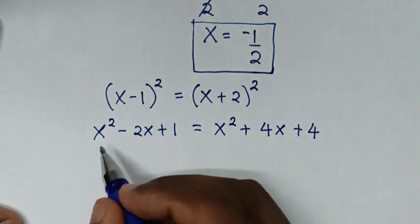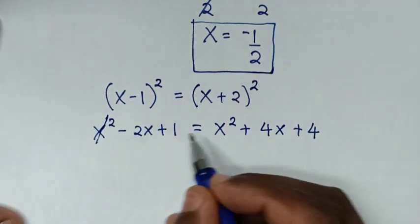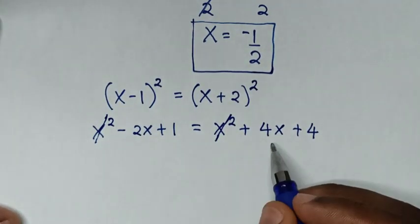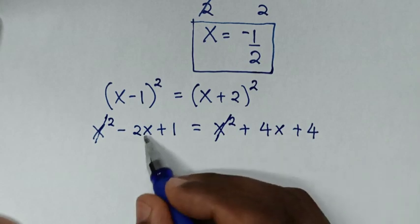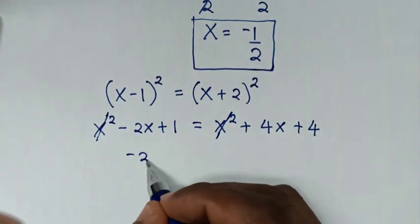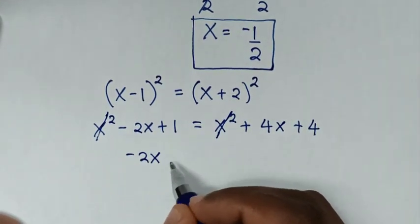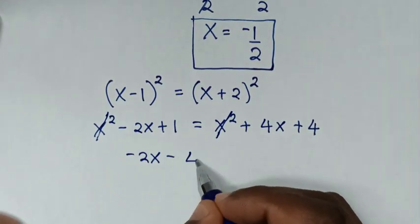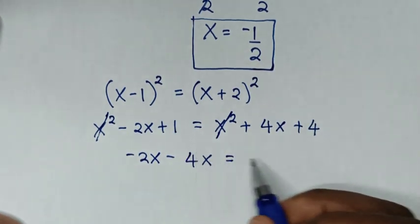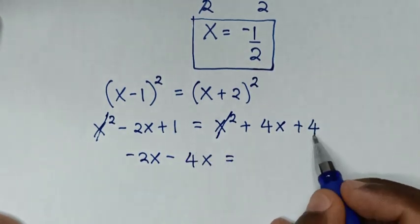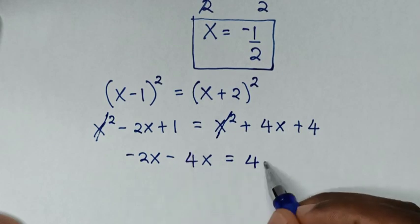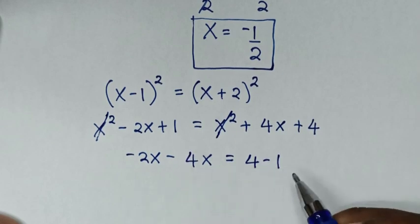Since x squared appears on both sides, it cancels. Taking 4x to the left side and 1 to the right side gives: negative 2x minus 4x equals 4 minus 1.